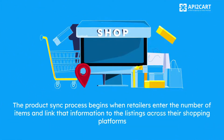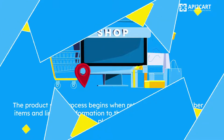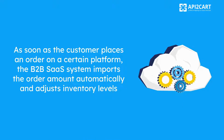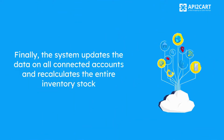The product sync process begins when retailers enter the number of items and link that information to the listings across their shopping platforms. As soon as the customer places an order on a certain platform, the B2B SaaS system imports the order amount automatically and adjusts inventory levels. Finally, the system updates the data on all connected accounts and recalculates the entire inventory stock.